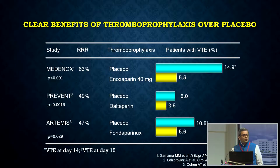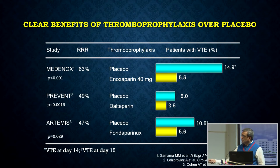If you are going to use LMWHs, there are three available for use in the ICU. The Medinox trial showed that Enoxaparin was excellent at reducing DVT-PE. The PREVENT trial showed Dalteparin was very good, and the Artemis showed that Fondaparinux did the job at 2.5 mg. So you have the pharmaceutical agents, the trial data, and it is there for you to use in the ICU for appropriate patients.